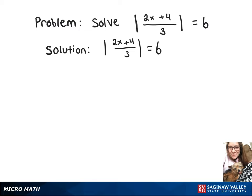In this video, we're going to solve the absolute value of 2x plus 4 over 3 equals 6. That's going to give us two equations.